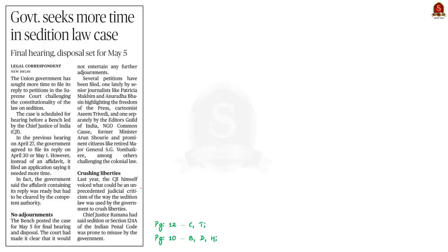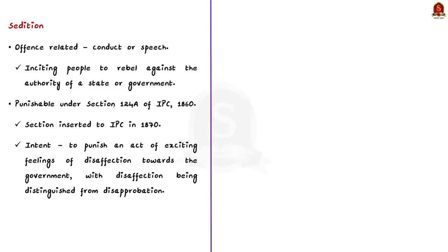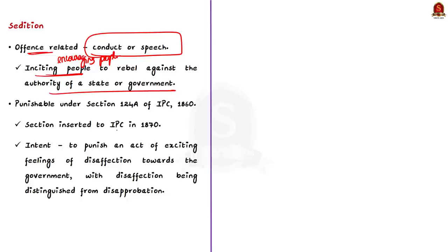This news article is about the sedition law. Its constitutionality has been challenged in the Supreme Court through several petitions, and the Union Government has sought more time to file its reply. Sedition literally refers to the offense related to conduct or speech that incites or encourages people to rebel against the authority of a state or government. The sedition law is Section 124A of the Indian Penal Code (IPC), which defines what constitutes sedition.